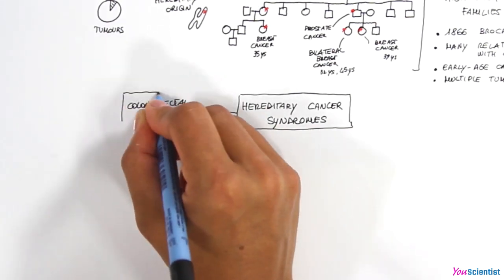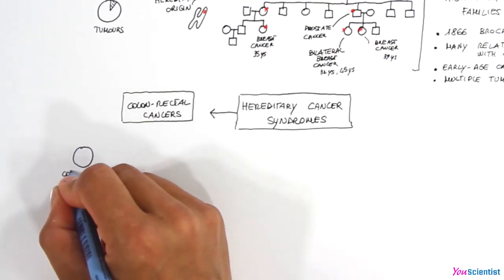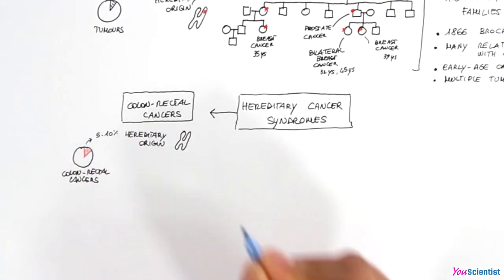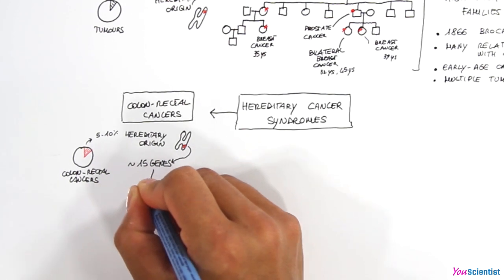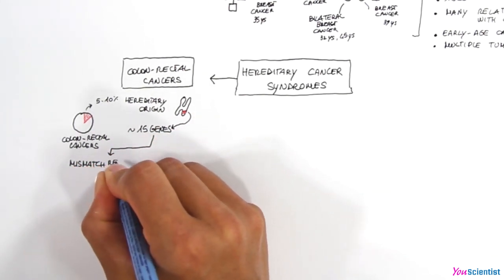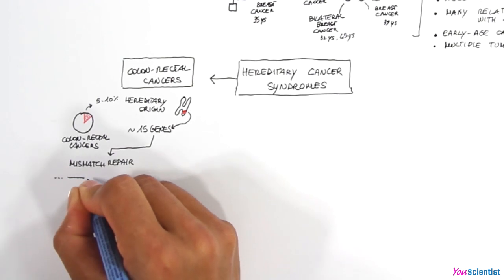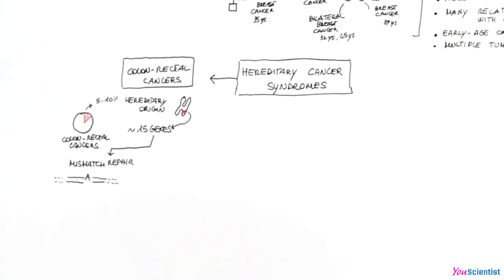For instance, in the case of colorectal cancers, around 5 to 10% have a genetic origin. Up to now, about 15 genes have been identified. Some of them are involved in the mismatch repair system that repairs DNA damage. During DNA replication,